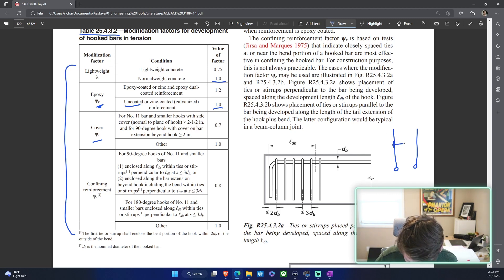We have bars at six inches on center so we meet that two and a half inch criteria. And then for 90 degree hooks with cover on bar extension beyond the hook - here's the bottom of our footing. Down here, because it's the bottom of our footing we know we have a clear cover of three inches.